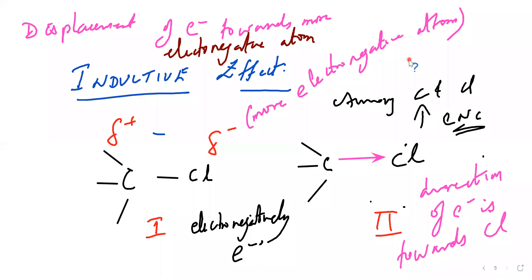From an entrance exam point of view, they can ask one question and give you four options. Sigma bond, pi bond, and all. Sigma bond is in single bond. Pi bond means double or triple bond.